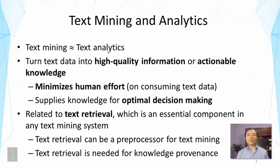I want to say a little bit about these two different angles of the result of text mining. In the case of high quality information, we refer to more concise information about the topic, which might be much easier for humans to digest than the raw text data. For example, you might face a lot of reviews of a product. A more concise form of the information would be a very concise summary of the major opinions about the features of the product — for instance, concise information that is positive about the battery life of a laptop. This kind of result is very useful to help people digest text data, minimizing human effort in consuming text data.